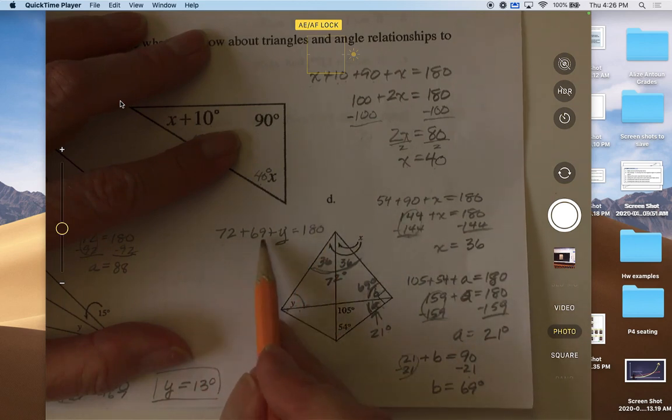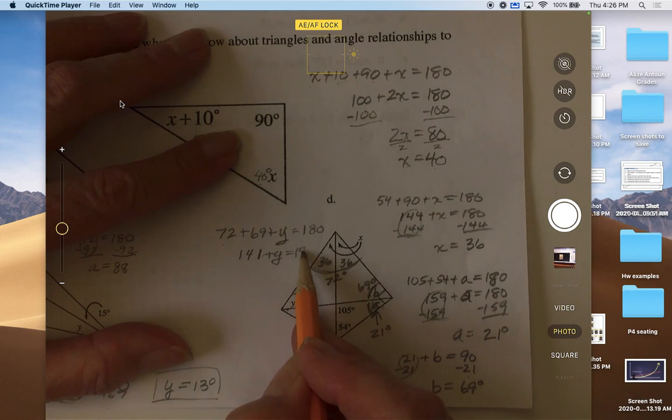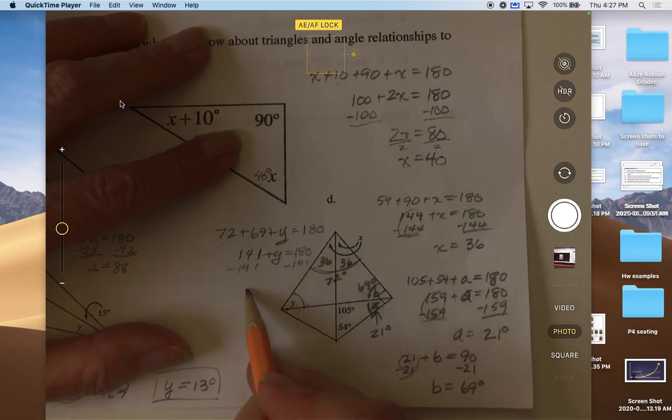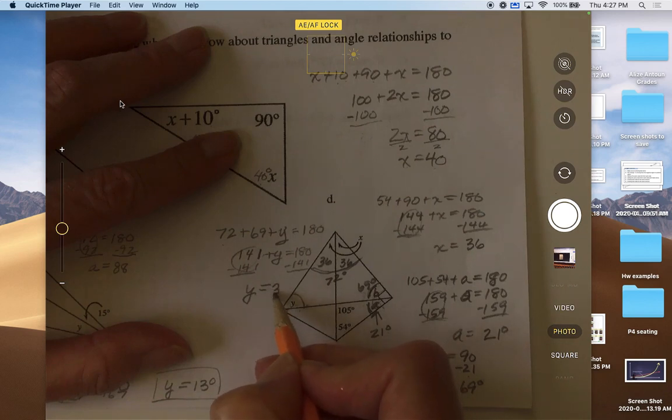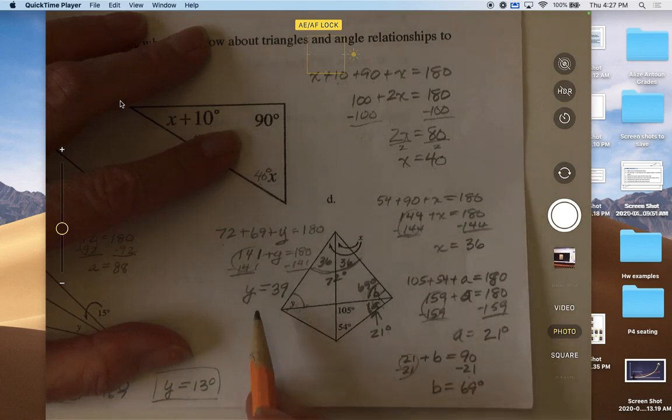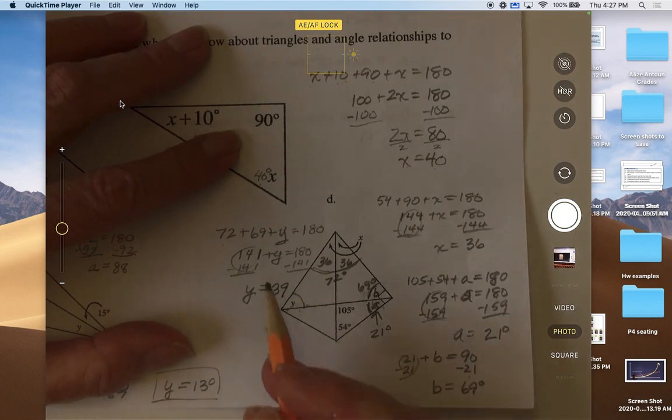We add these two together, so that would be 141 plus y is equal to 180. Then we subtract 141 from both sides, and we get this zeros out. Y is equal to, let's see, that would be 40, but now instead it's 39.